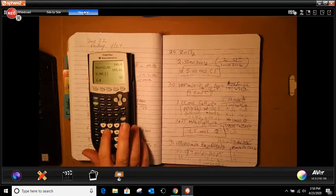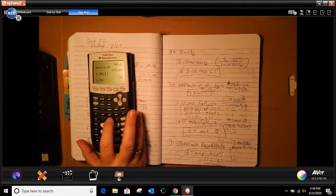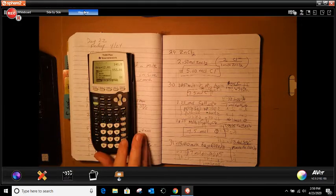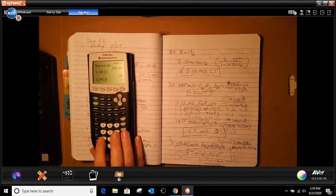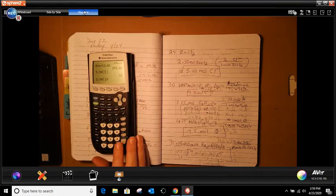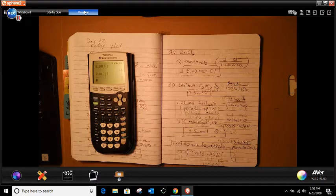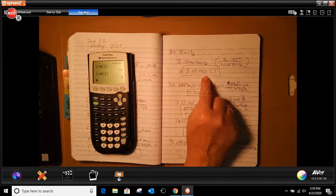So it tells us there's 2.50 moles of ZnCl2. And it's asking us how much of it is Cl. So we're going to do 2.50, open bracket, alpha Y, enter, we're going to do 2 over 1, and then we're going to close our bracket, and we're going to hit enter, and then we get 5 moles of chlorine.